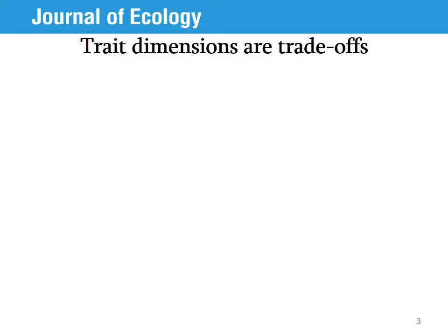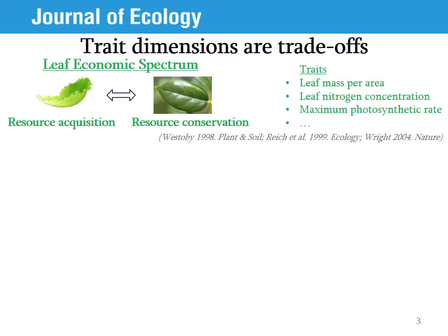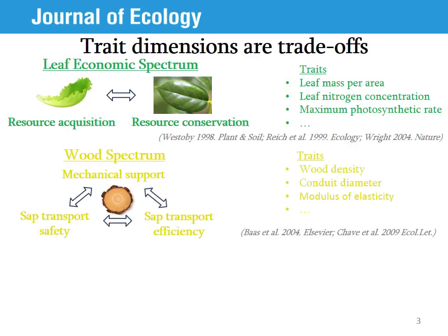Five major dimensions have been identified in the literature, and here I present three on which I have focused for this work. First, the leaf economic spectrum is probably the best known trait dimension. It reflects a trade-off between the ability of a leaf to acquire and conserve resources. Some leaves will have a fast metabolic rate but cannot live very long; on the other hand, you have leaves that have a slow metabolic rate but they can live long. Some of the traits associated with this trade-off include leaf mass per area, leaf nitrogen concentration, and maximum photosynthetic rate.